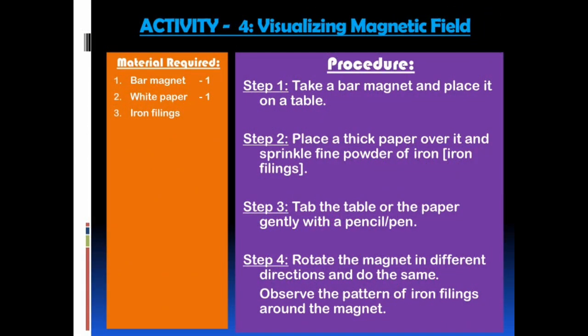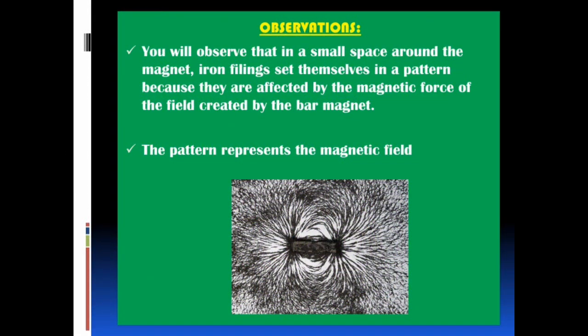Activity 4: Visualizing the magnetic field. Materials required: bar magnet (1), white paper (1), iron filings. Procedure — Step 1: take a bar magnet and place it on a table. Step 2: place a thick paper over it and sprinkle iron filings. Step 3: tap the table or paper gently with a pencil or pen. Step 4: rotate the magnet in different directions and do the same; observe the pattern of iron filings around the magnet. Observations: you will observe that in the small space around the magnet, iron filings set themselves in a pattern because they are affected by the magnetic force of the field created by the bar magnet.